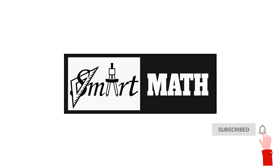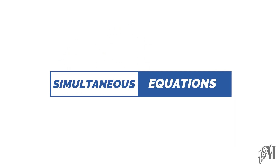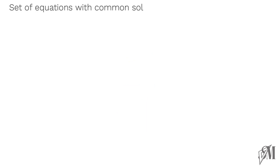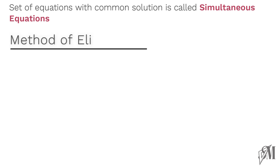Hi everyone, welcome to Smart Math Online Tutor. Through this video we are going to discuss simultaneous equations. A set of equations with a common solution is called simultaneous equations. There are a few methods to find the solution of a given pair of simultaneous equations. One of the most often used methods is the elimination method. Let me explain this method through an example.